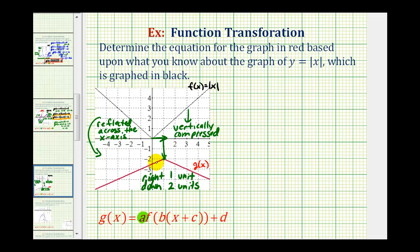Well because it's right one unit, that'll help us determine the value of c, and because it's down two units, that'll help us determine the value of d. Which means we can write g of x in terms of f of x as a times f of the quantity x plus c plus d. So what we'll do here is determine the values of c and d from the transformations, and then use a point on the red graph to perform substitution and solve for a.